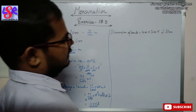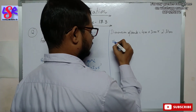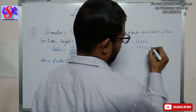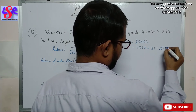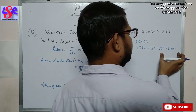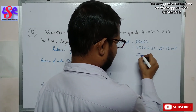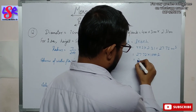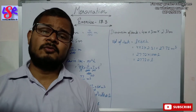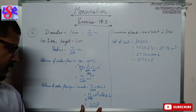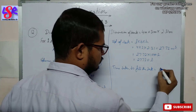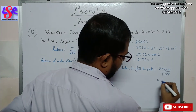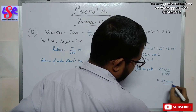Now we find the volume of the tank: Volume = L × B × H = 4 × 3 × 2.31 = 27.72 m³. Converting to litres: 27.72 × 1000 = 27720 litres. The time taken to fill the tank = 27720 / 1155 = 24 minutes.